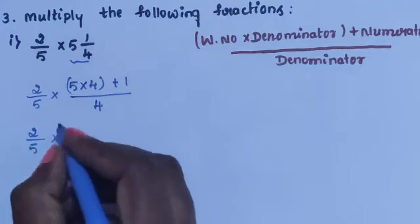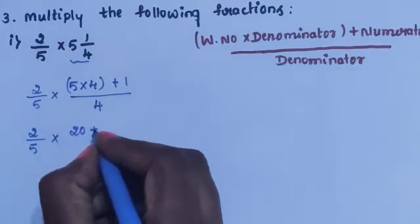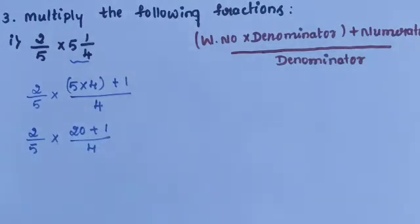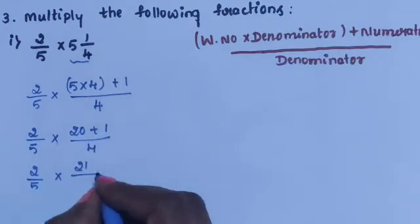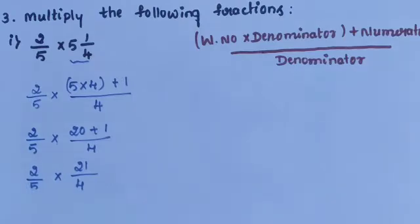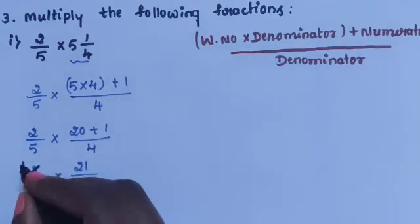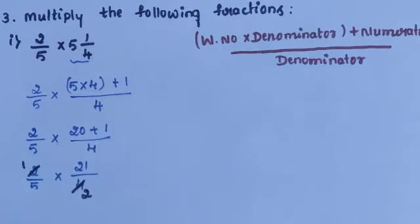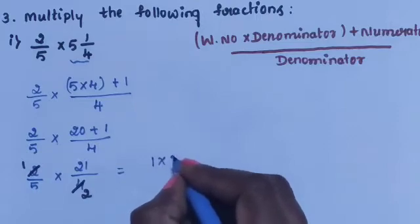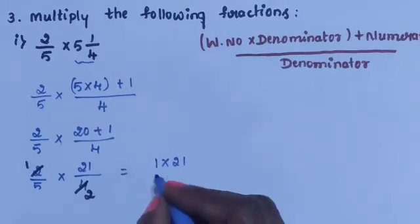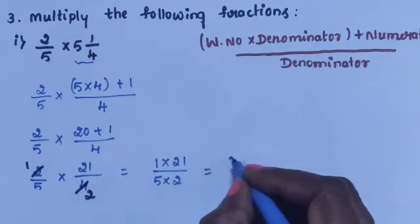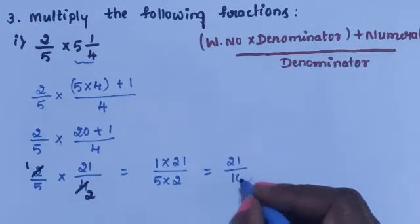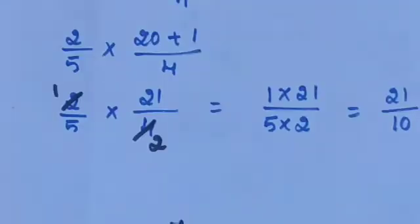2/5 into 5, 4 is 20 plus 1, divided by 4. So 2/5 into 21/4. Then 2 and 2 cancel. Remaining 1 into 21 divided by 5 into 2. 21 divided by 10. So 21/10 is the answer.